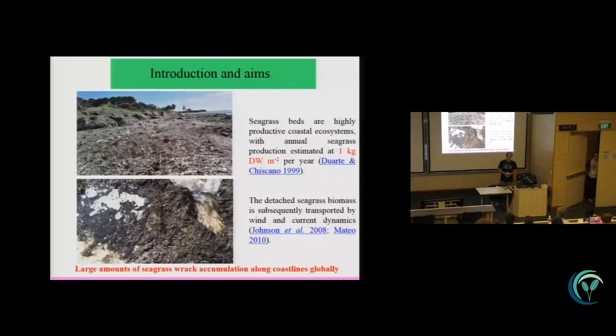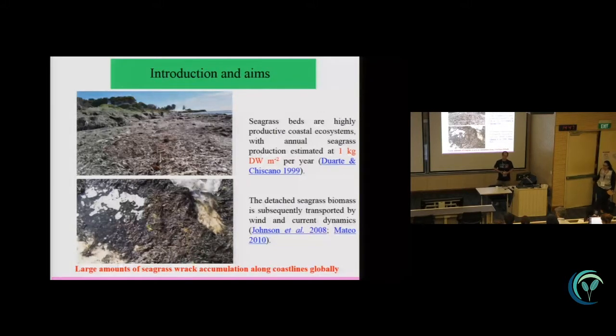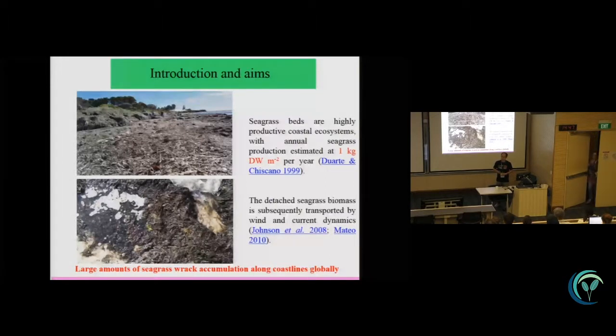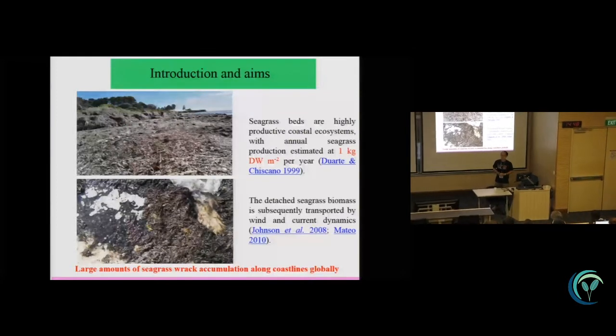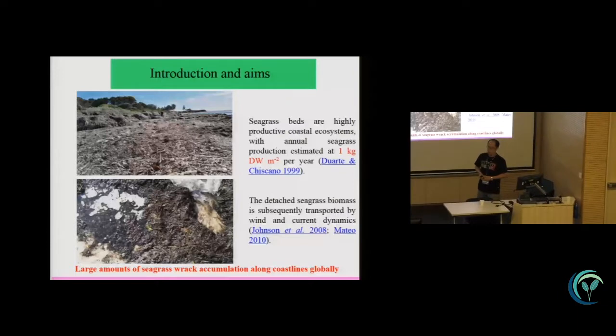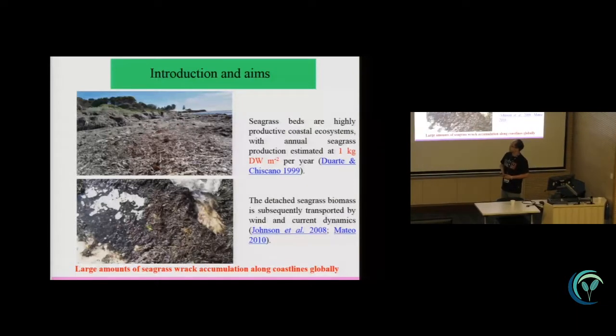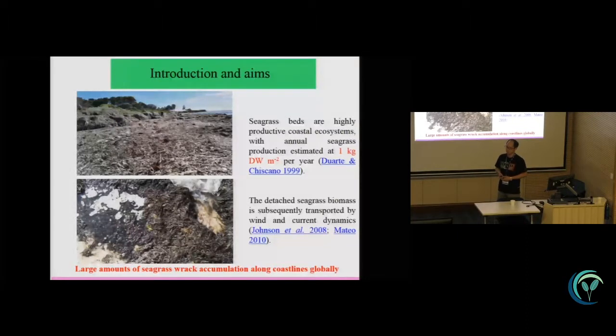As we know, seagrass beds are a highly productive ecosystem. The production will be one kilogram of dry weight per square meter per year. But the seagrass, the parts of the seagrass can be detached, so the leaf and the rhizome can become the litter. And the wind and seabed carbon dynamics will transport the wrack to the beach, so large seagrass wrack will accumulate on the beach.